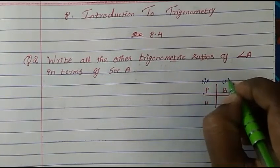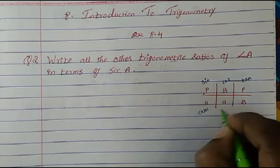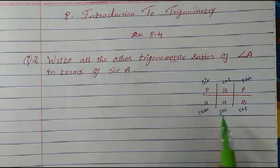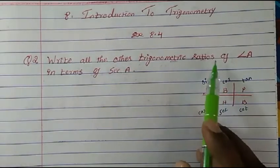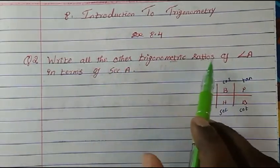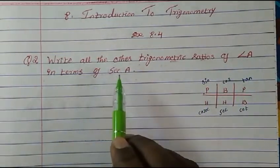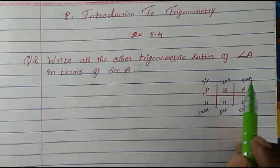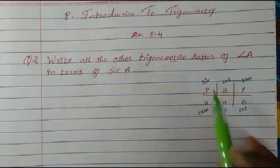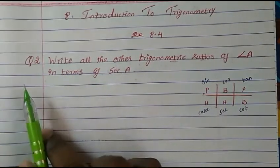The trigonometric ratios are sine, cos, tan, cosec, sec, and cot. We have to express all the other trigonometric ratios of angle A (theta) in terms of sec A — so sine, cos, tan, cosec, and cot all expressed in terms of sec.